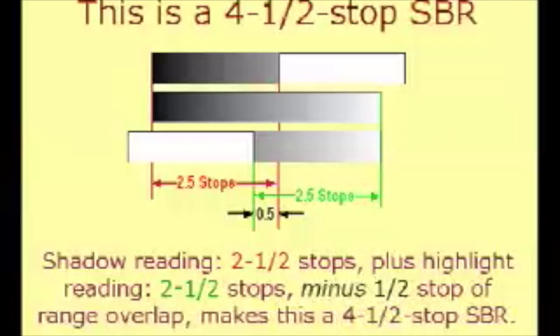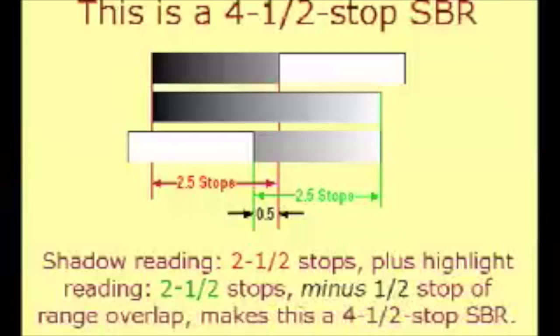If you want to increase contrast even more dramatically, you can shorten the range further by arbitrarily making the high reading lower than the low reading. In this illustration, that's been done, and the shadow and highlight readings overlap by one half stop. Subtracting the low EV from the high EV gives us a minus half stop, which added to 5, shows the subject range to be only 4 and a half stops.